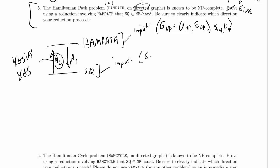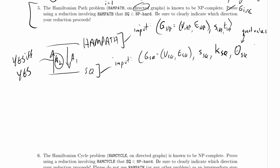For SQ we have G_SQ = (V_SQ, E_SQ). We consider a wormhole to be an edge and a star system to be a vertex. There is also the start star system S_SQ, the threshold value K_SQ — we need to accumulate at least K quest value — and the quest value function theta_SQ, which tells us the quest value of each of the nodes.